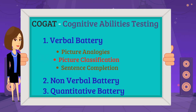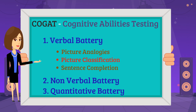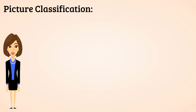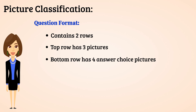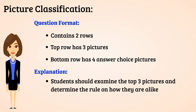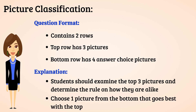Picture classification is one of the question types in the verbal battery, which we are going to learn in this video. You will be provided with two rows: the top row has three pictures, and the bottom row has four pictures which are the answer choices. You should examine the top three pictures, determine the rule on how they are alike, and choose one picture from the bottom row that goes best with the pictures in the top row.